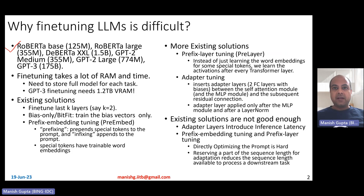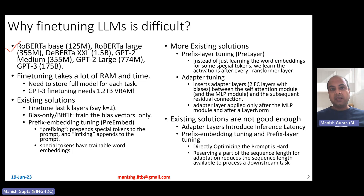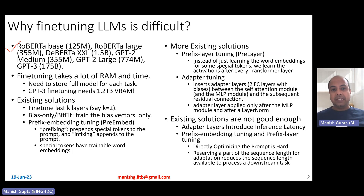Fine-tuning these models takes a lot of RAM and time. You need to store the full model for each task. Even if you could fine-tune them, if you have 50 different tasks, you need to save insanely large amounts of each model. For example, fine-tuning a GPT-3 model needs 1.2 TB of VRAM, which is very difficult to obtain for most organizations.